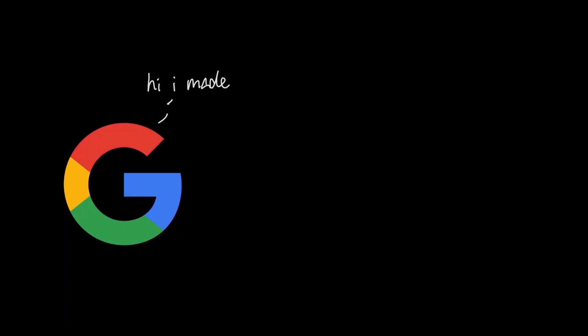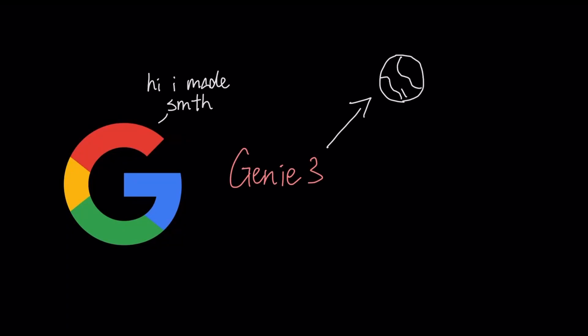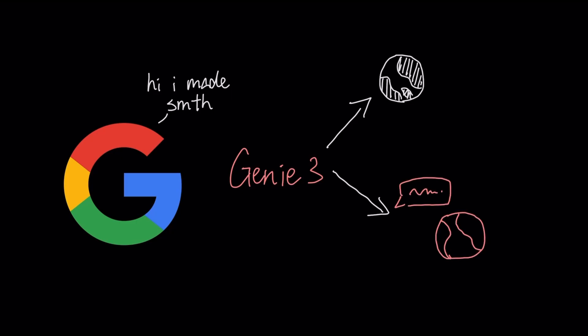Google just dropped a new frontier world model, Genie 3, an AI that can understand how the world works, but can also make you your own little world based on simple text prompts in real time.